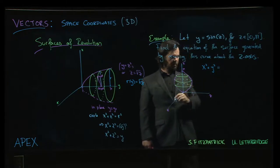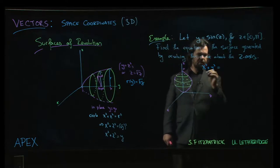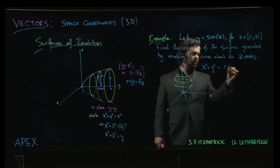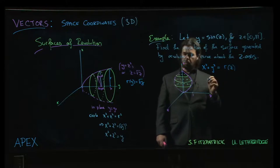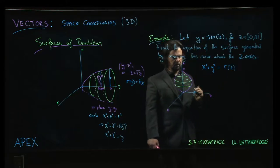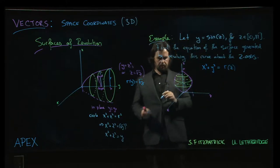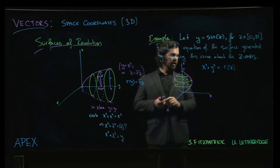and now the radius. The radius is always a function of the variable corresponding to the axis we revolve around, which in this case is the z-axis.